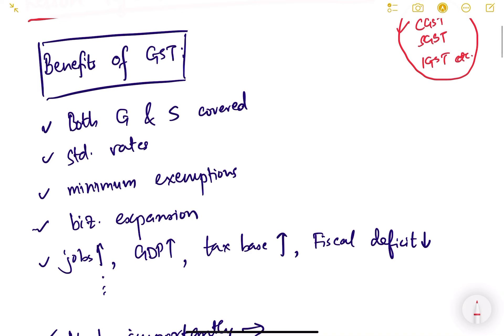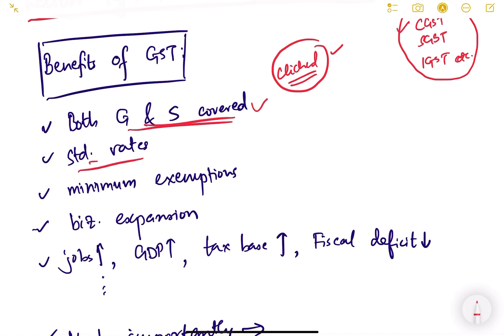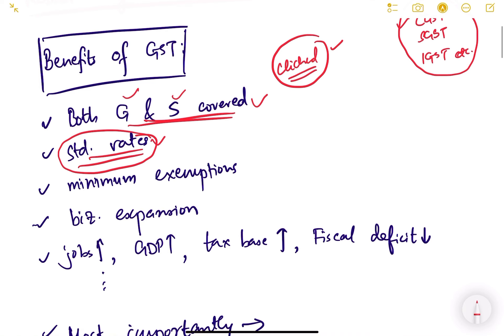First, there are some benefits which are very commonly known. Both goods and services are covered under standard rates, so there is not much confusion. GST has subsumed a lot of central and state taxes covering both goods and services. Input tax credit has become easy, the cascading effect has reduced, and standard rates are applicable throughout the country — making it a one nation, one tax structure.